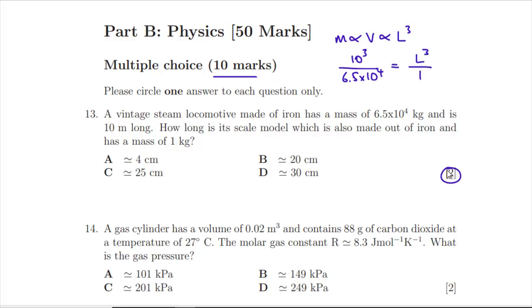So 10 cubed divided by 6.5 times 10 to the 4 has got to be equal to l cubed divided by 1. So l cubed is going to be 1 over 65, which is close to—I mean 4 cubed is 64—so it's not far off being a quarter. So let's go with C, that's roughly 1 over 4 cubed. That was good.